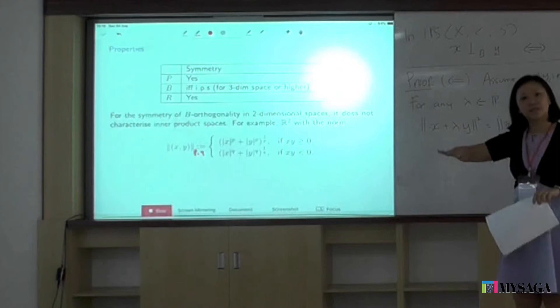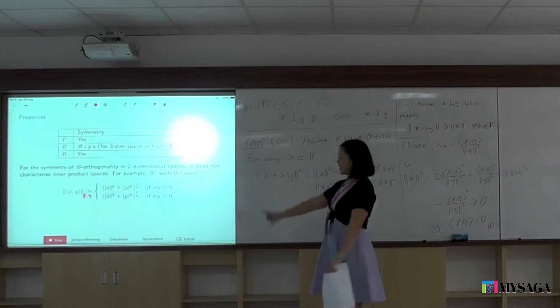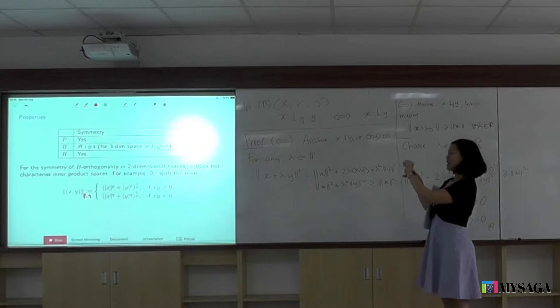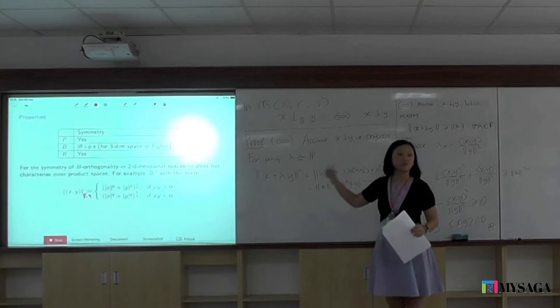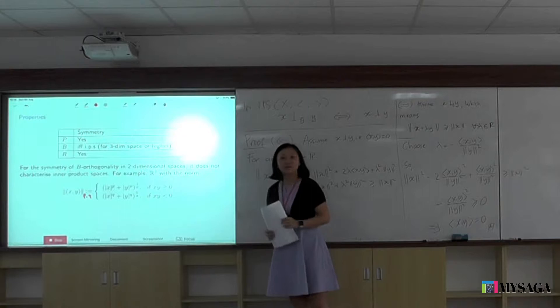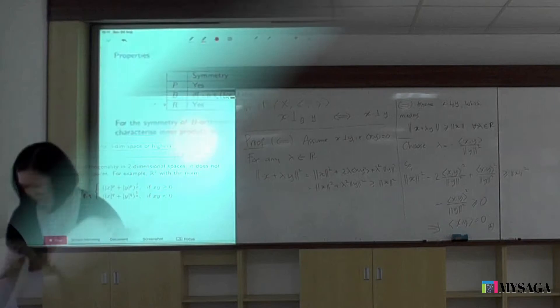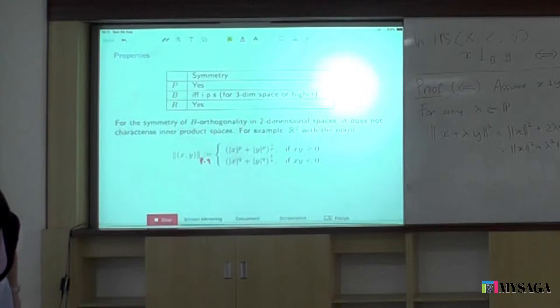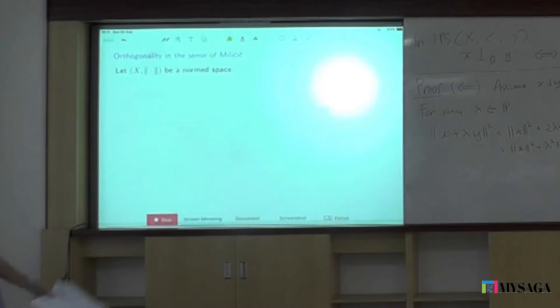Especially for Birkhoff orthogonality, there's a distinction between two-dimensional space and three-dimensional space and higher. In fact, it's more difficult to do things in two-dimensional space for these kinds of characterization results than in three-dimensional and higher — which is very strange. Now back to Milicic and the G-orthogonality that I somewhat introduced already yesterday. Milicic actually introduced four kinds of orthogonality.